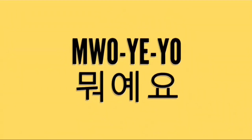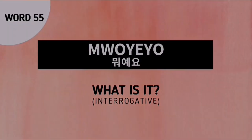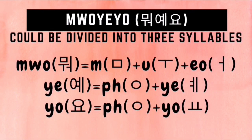Word number 55 is 뭐예요 (Boyeo or Mwoyeyo). Our word for today is Moeo or Boyeo, used to ask 'What is it?' To write 뭐예요 in Hangul, it is composed of three syllables. For the first syllable, Moeo, we draw a Miam character followed by a U character followed by an A character. For the second syllable, Yee, we draw a placeholder Iang followed by the Ye character. For the last syllable, we draw a placeholder Iang followed by the Yee character itself.